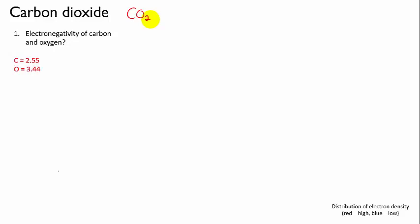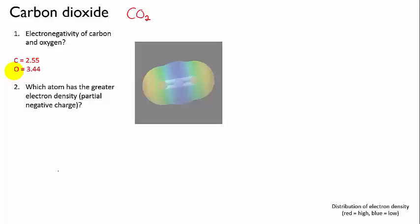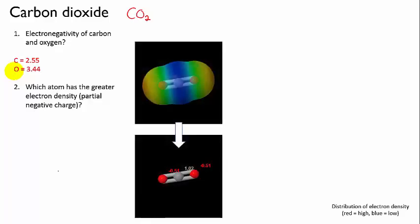First of all, we look up the electronegativity of the two atoms and we can see that oxygen is the atom with the greater electron density, so it will have the partial negative charge. And there are the pictures from the molecules 360 database.